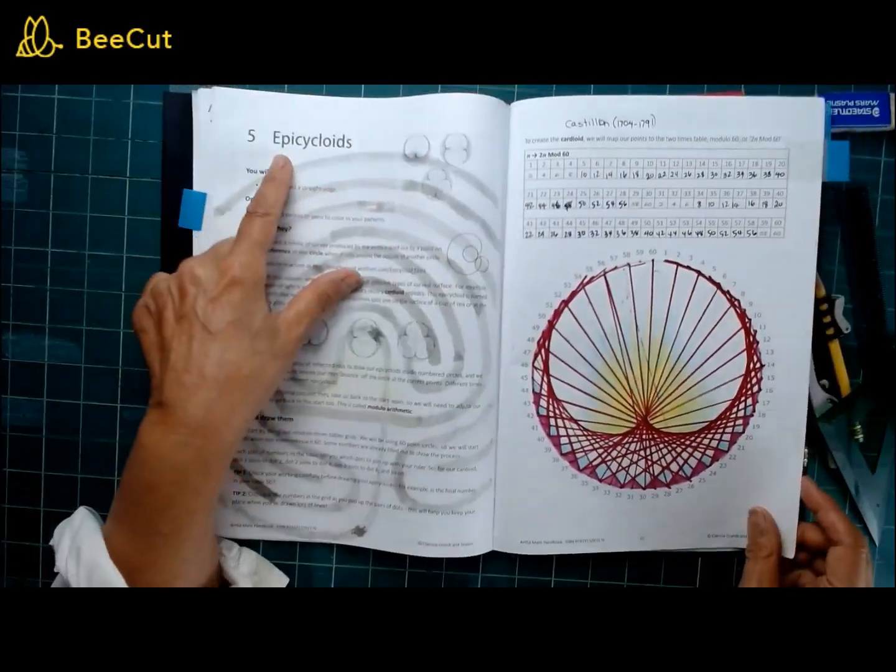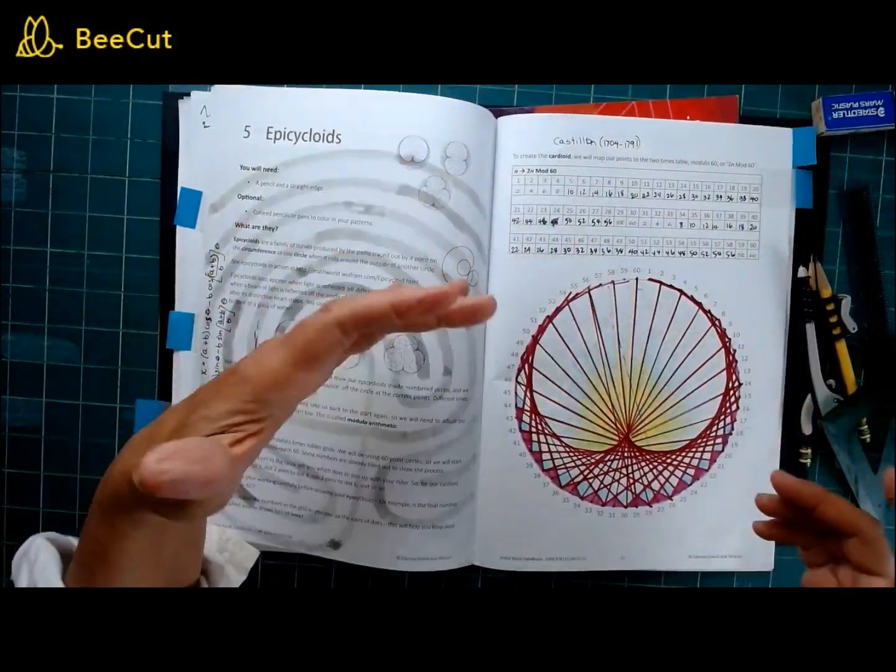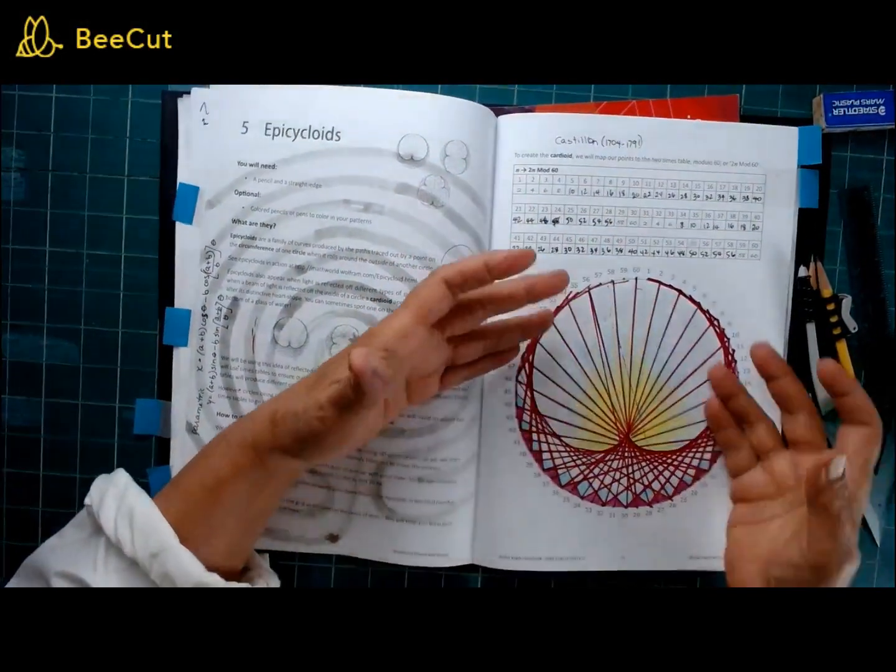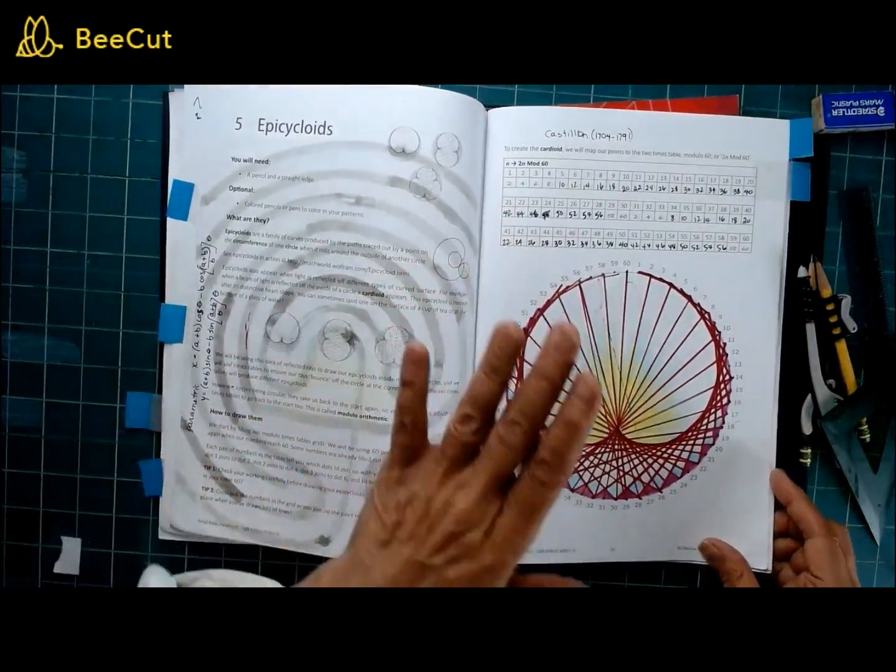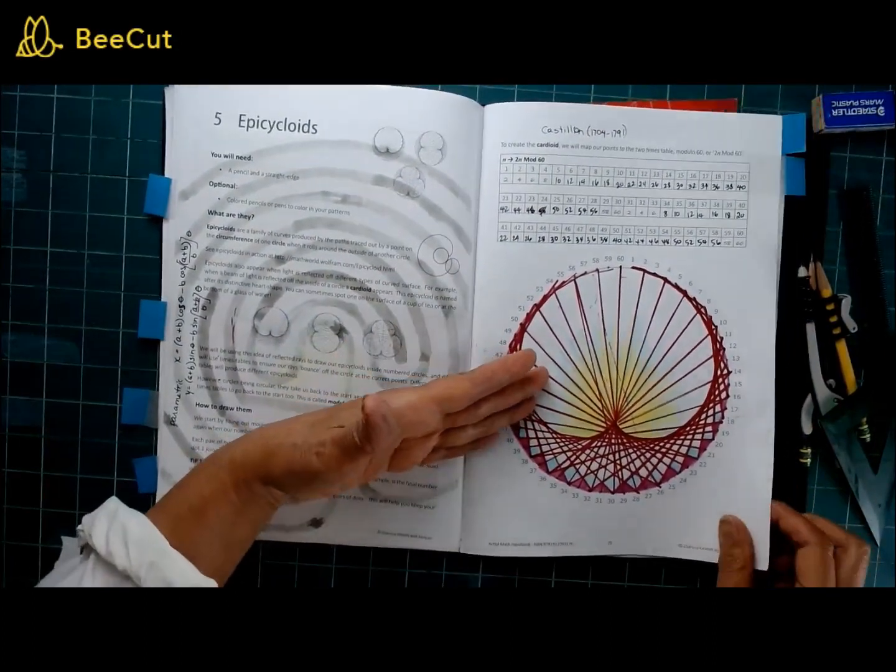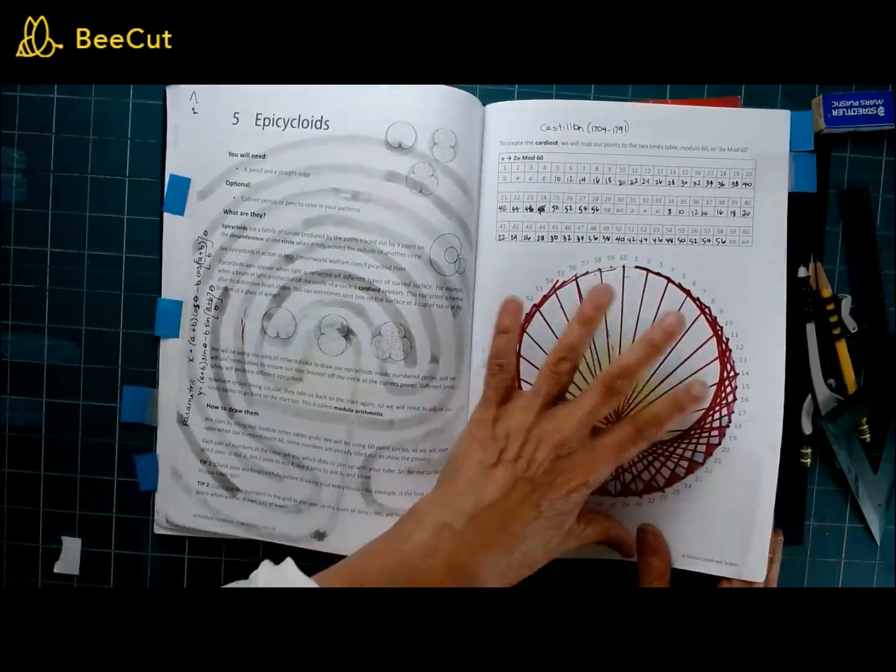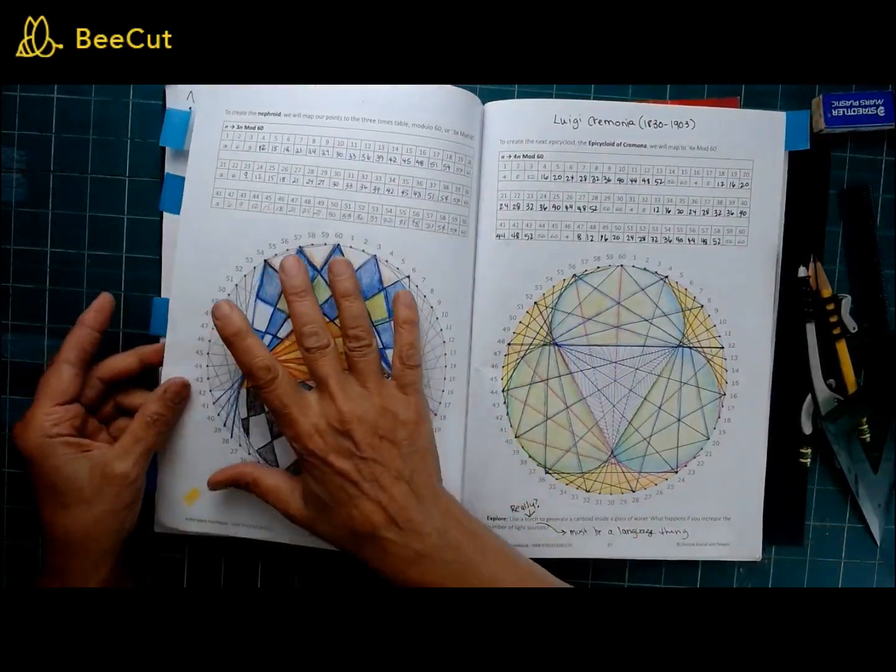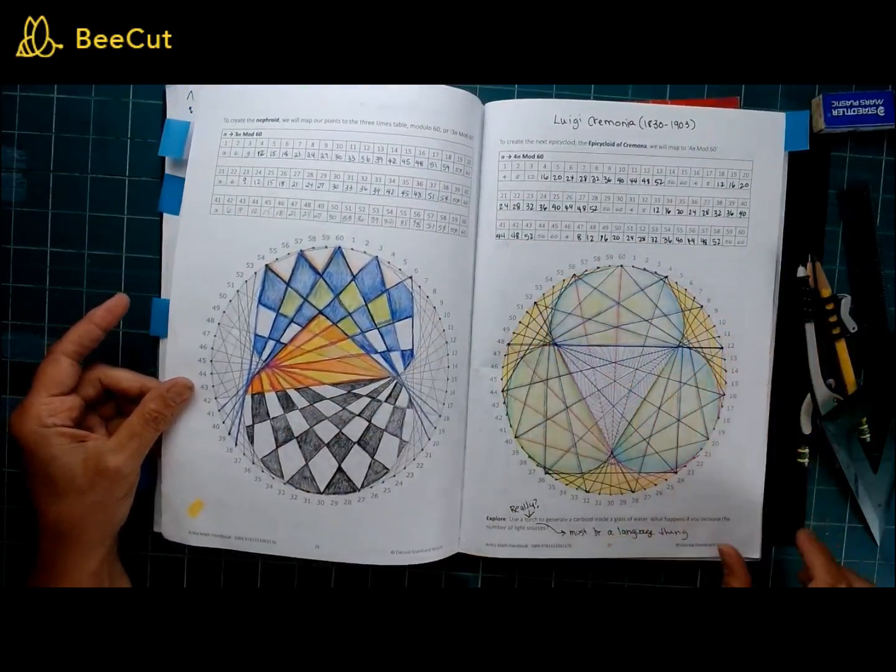After I did the parabolic curves, the next one I did was epicycloids. One thing you'll be able to decipher is this is 2n mod 60. I didn't know what that really meant or how to express this when I began, but it becomes really obvious what it is. This is just joining up numbers and points to points according to a rule in a circle.